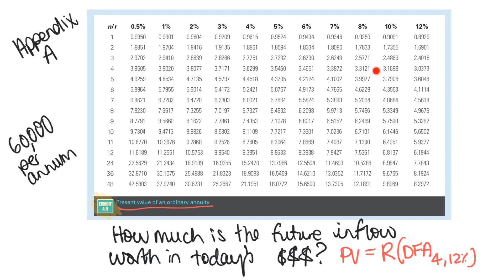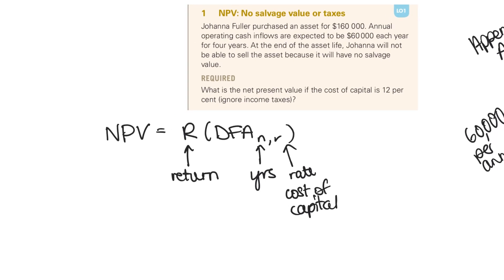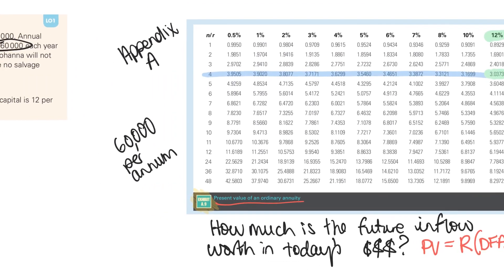So let's find the DFA from the table. I've got four years and a rate of 12%. Looking across year four and down the 12% column, the value we want is 3.0373. So the present value of my return is going to be the return multiplied by the DFA rate of 3.0373.